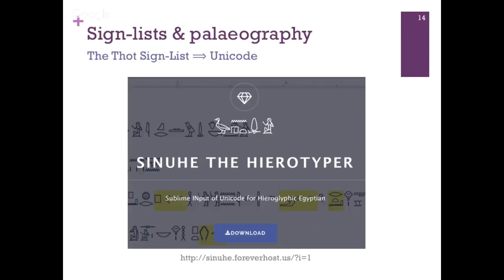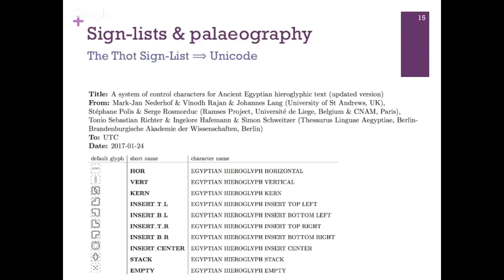Another big issue with Unicode is a kind of recursivity in the ancient Egyptian writing system, meaning you can embed units into units into units, and it's not easy to implement in OpenType fonts. There are ongoing discussions with the Unicode committee about what the best option is in terms of control characters for positioning hieroglyphs with respect to one another. It seems they've found a solution to this technological issue recently. If you can combine signs with a few operators, you need many fewer signs in Unicode; if not, you need to add many more combined signs. The whole process depends on the implementation of these control characters.